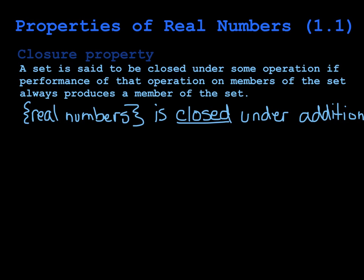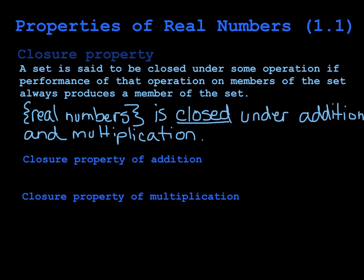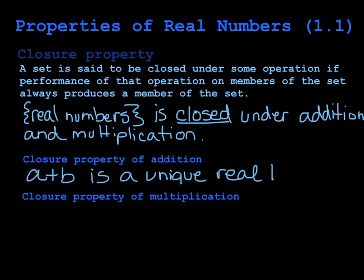It's also closed under multiplication because, for the same reason, if I took any two real numbers and multiplied them together, my solution is always going to be a number that is also real. So under closure we have two properties: the closure property of addition — and by addition I'm including subtraction, because subtraction is just the addition of a negative number — which says that a plus b is a unique real number. The closure property of multiplication says that a times b is a unique real number.